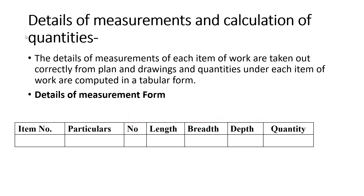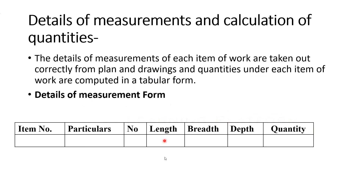The tabular form should consist of: item number; particulars, meaning the type of work to be done such as excavation or erecting a column; number, such as how many columns or walls; length of the activity — for excavation, the length of excavation; for a wall, the length of the wall; breadth; and depth. The quantity is obtained by multiplying number × length × breadth × depth.